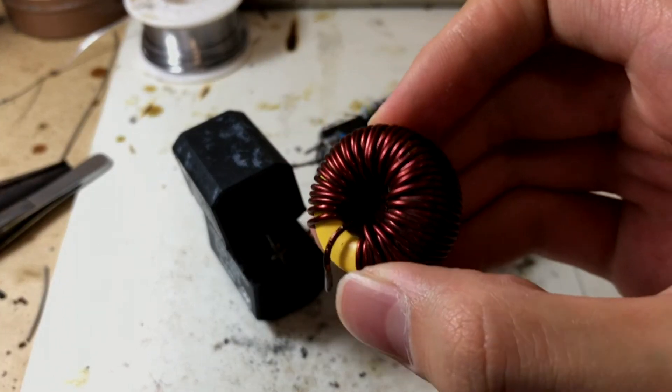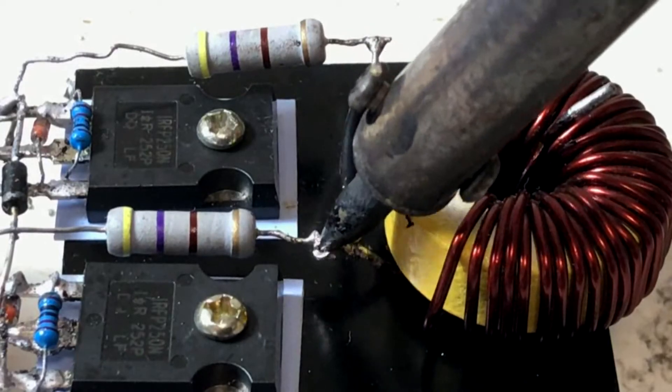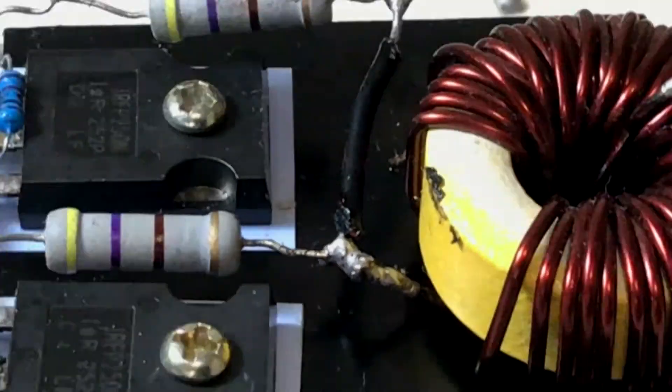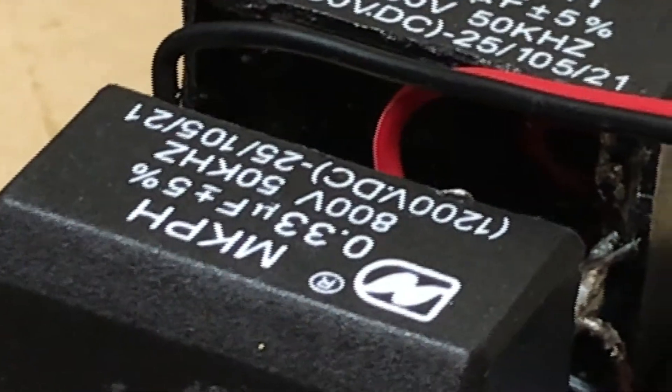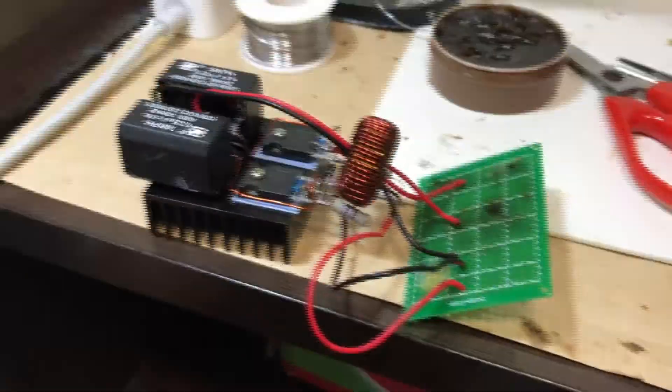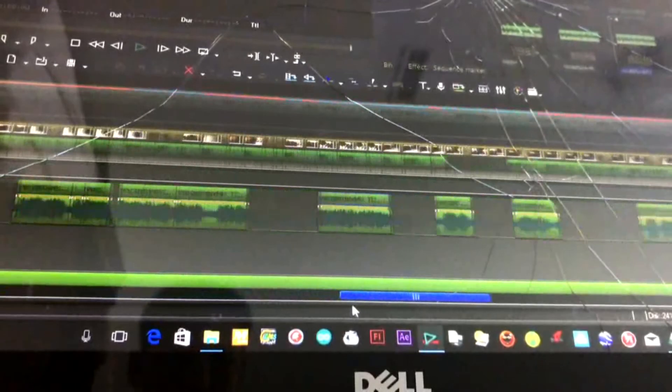The last step: take out a 200 micro henry inductor and solder it into one of the big resistors. Then you're done. In the next video I'll show you how to use this GVS driver. It will be very cool. I'll see you soon. I spent almost three days to finish this video. It's very complex. Anyway, thanks for watching.